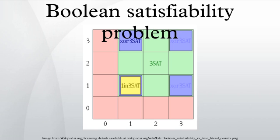An example of a problem where this method has been used is the clique problem. Given a CNF formula consisting of C clauses, the corresponding graph consists of a vertex for each literal, and an edge between each two non-contradicting literals from different clauses. The graph has a clique of size C if and only if the formula is satisfiable.